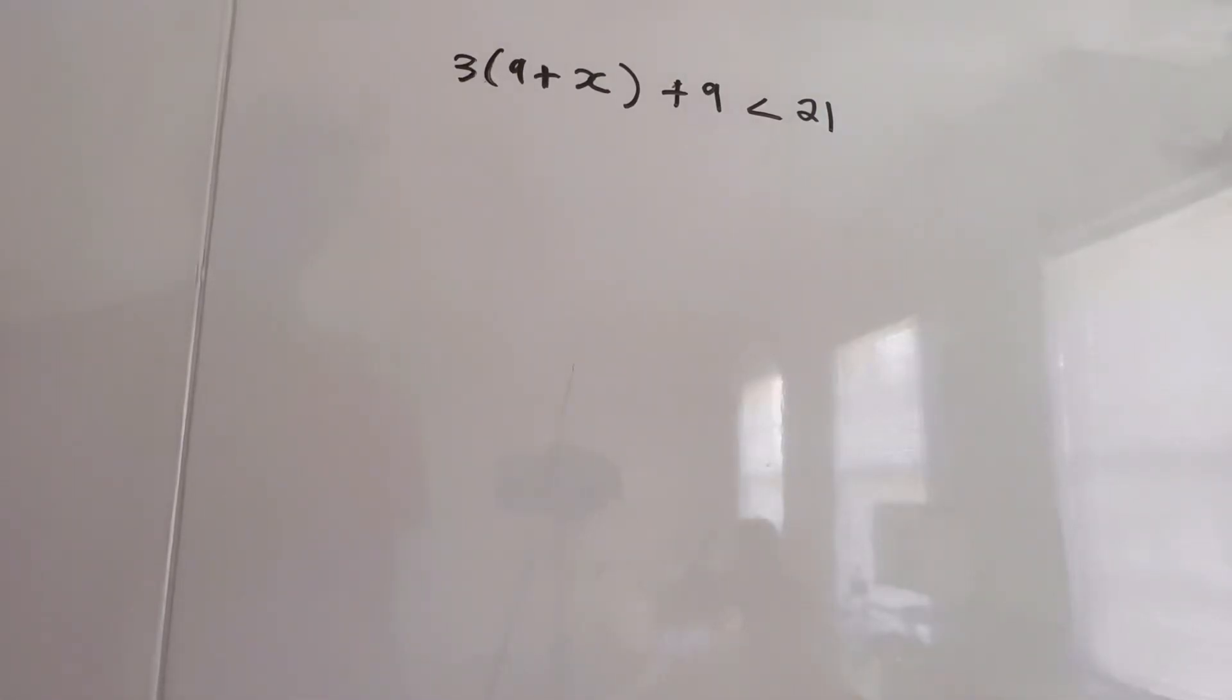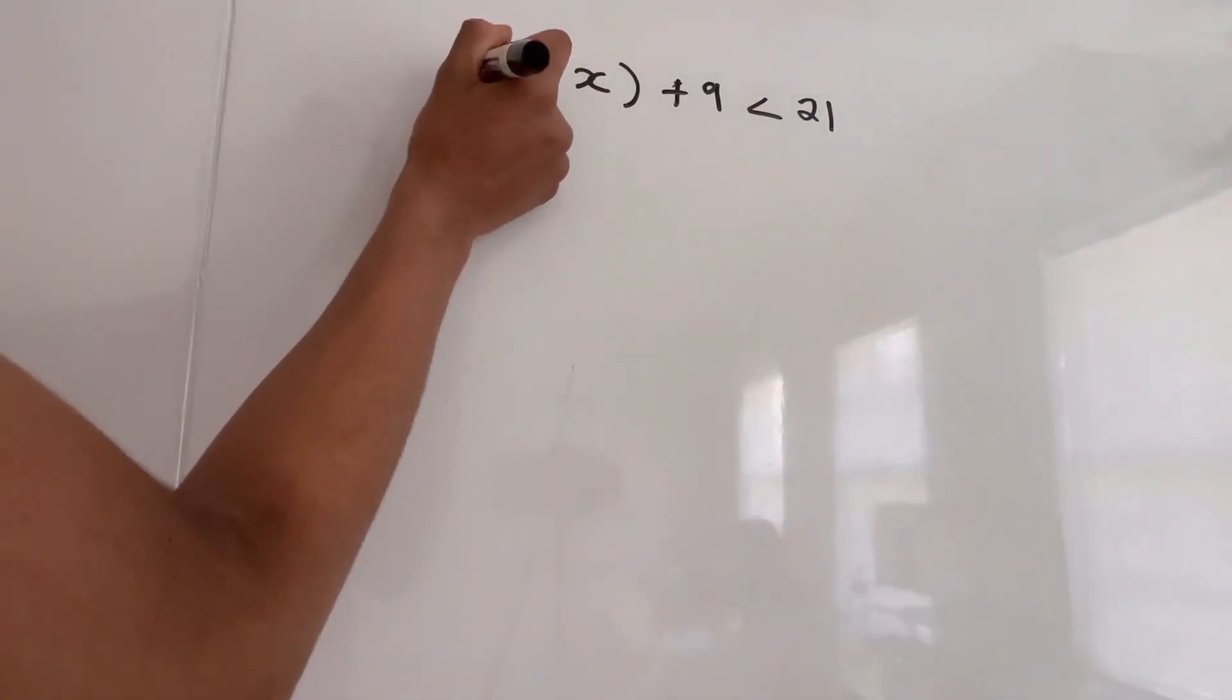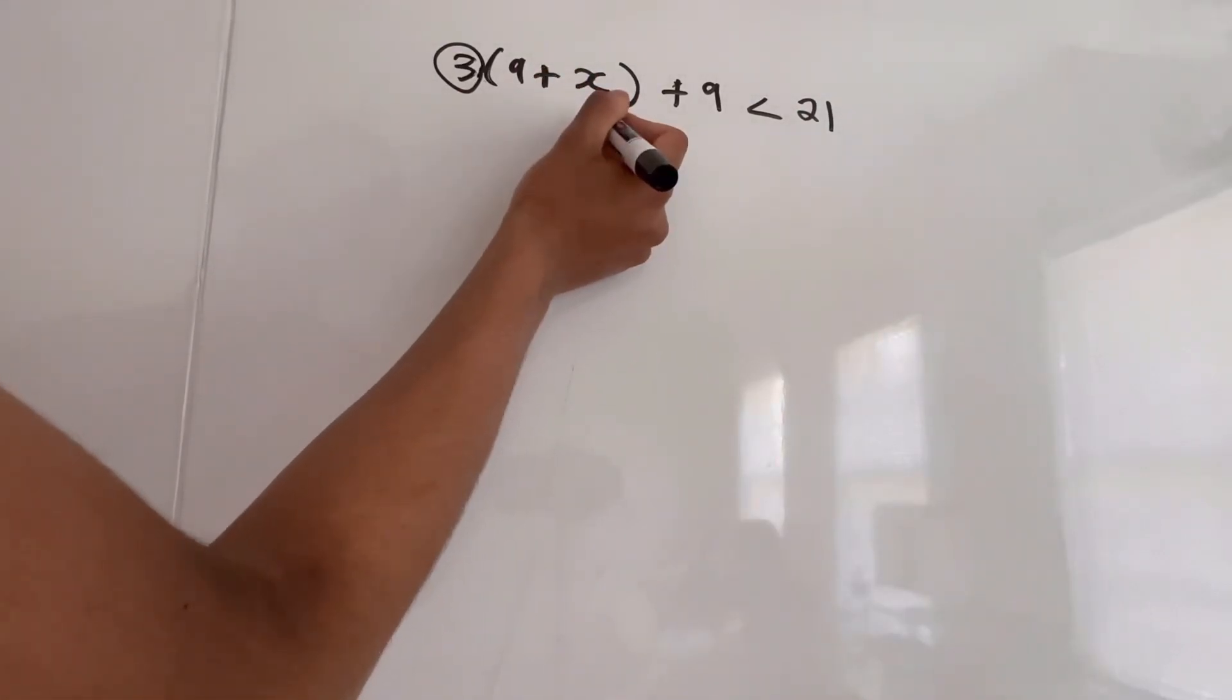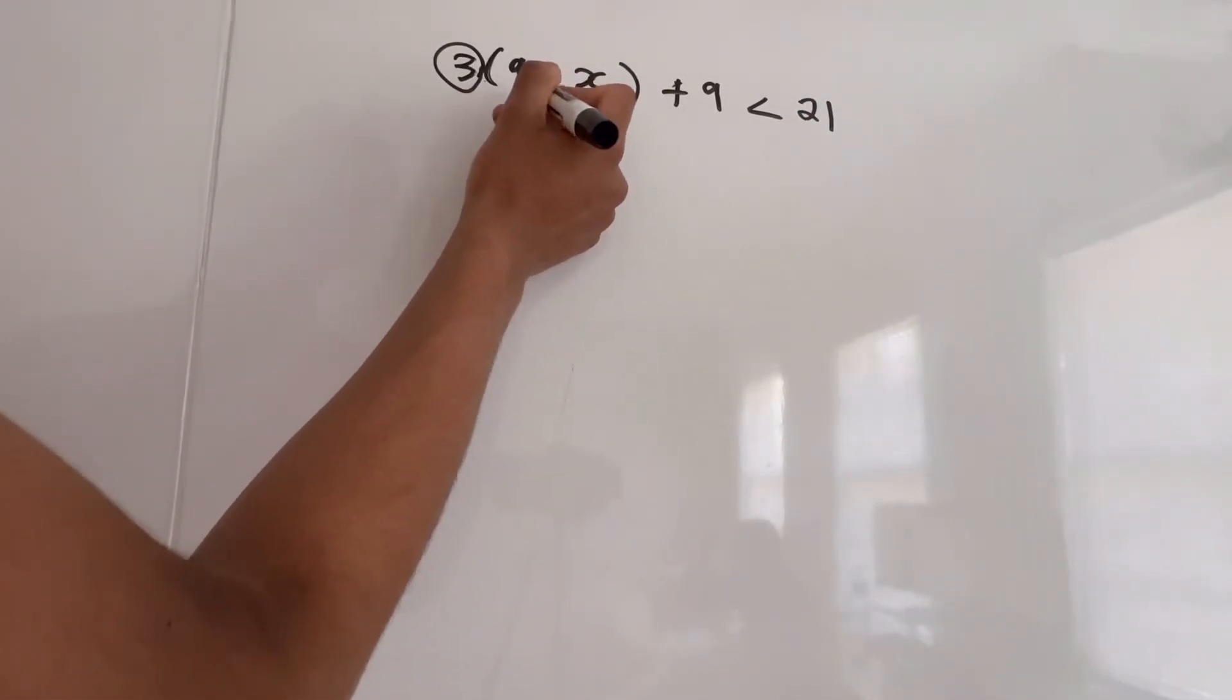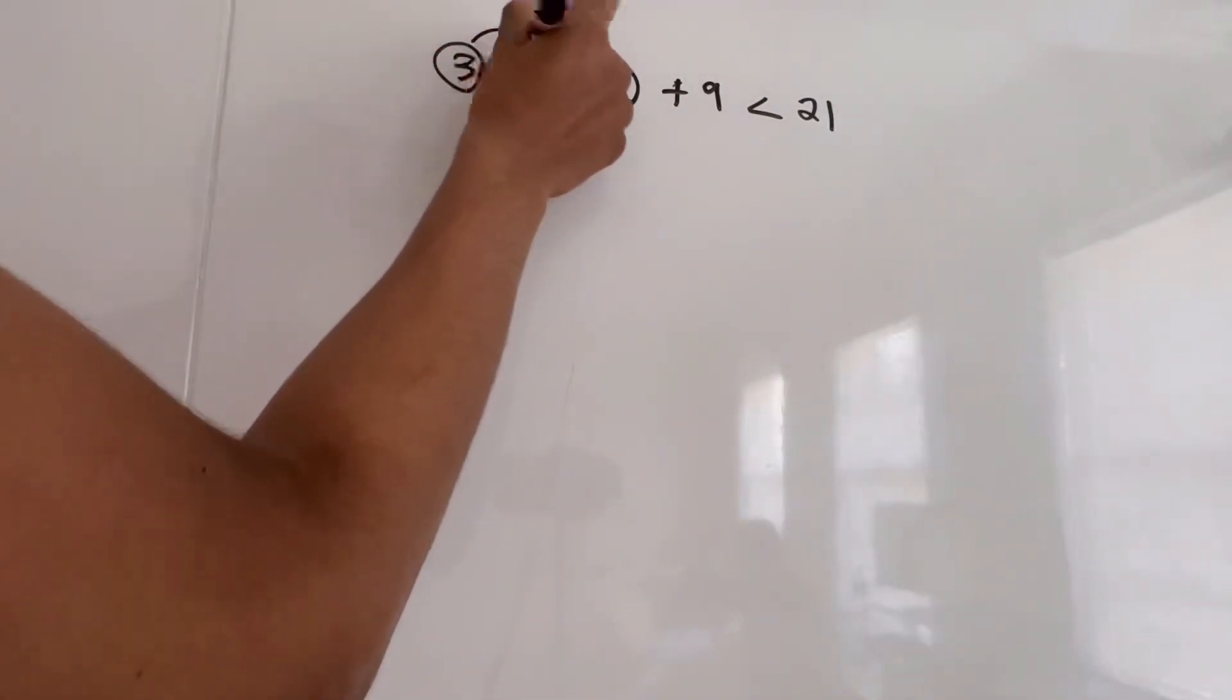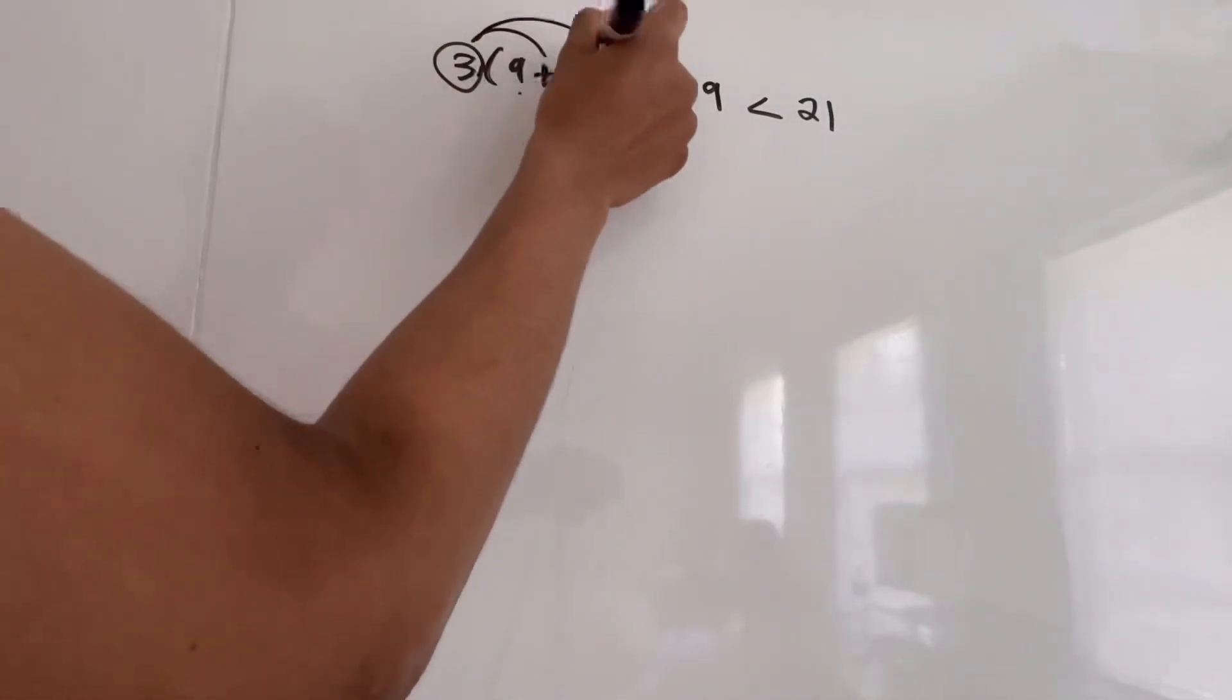And if you guys know how to distribute, you know that we have to multiply our outside term here with all our terms in our parentheses, which in this case are 9 and x.